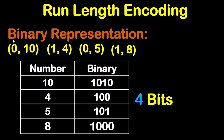Now we are going to convert these numbers — 10, 4, 5, 8 — to binary. 10 in binary is equal to 1010. 4 is equal to 100. 5 is equal to 101. 8 is equal to 1000 like this.